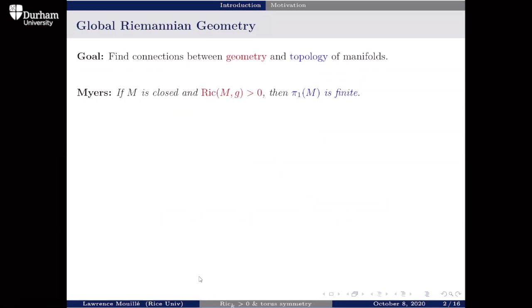So for example, the manifold can't be diffeomorphic to some manifold cross a torus. When studying torus actions, situations like this are going to be ruled out if we're expecting positive Ricci curvature.